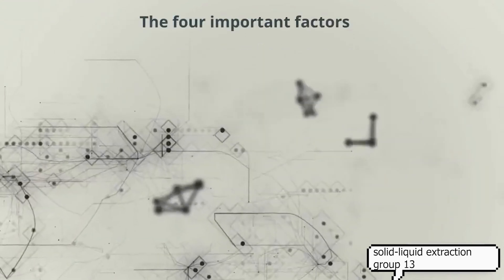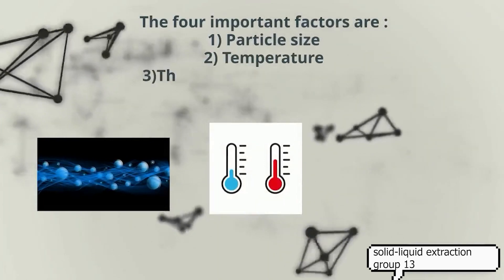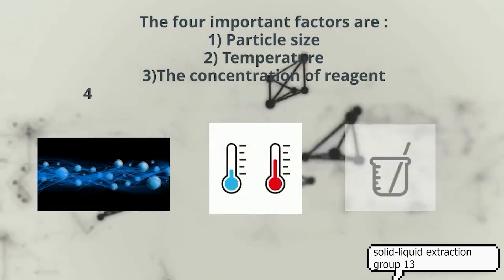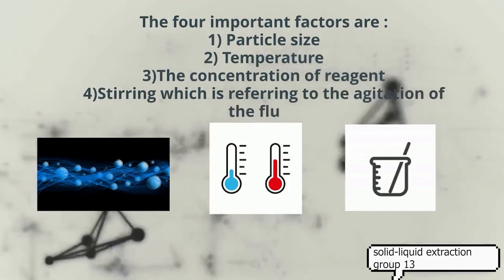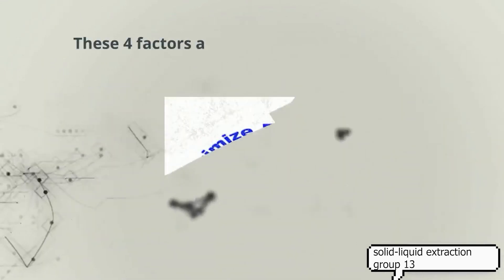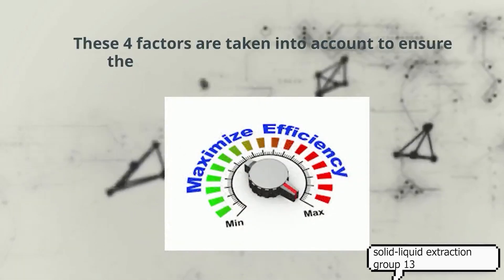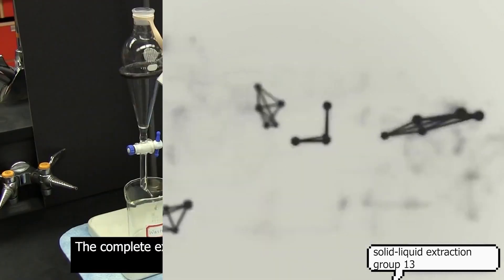The four important factors are particle size, temperature, concentration of reagent, and stirring, which is referring to the agitation of the fluid. These four factors are taken into account to ensure the maximum efficiency of the leaching outcome.